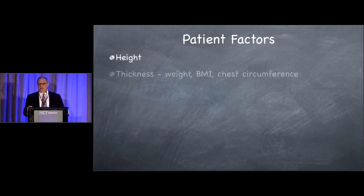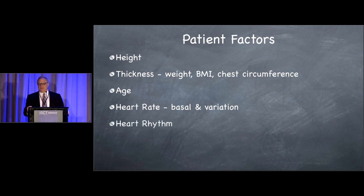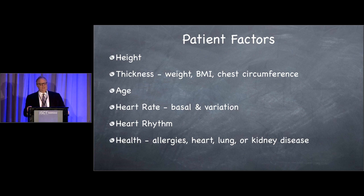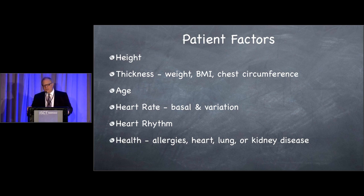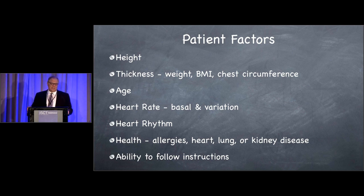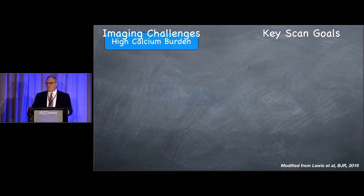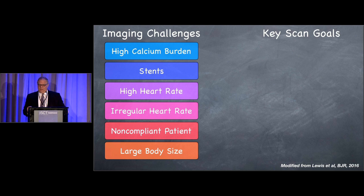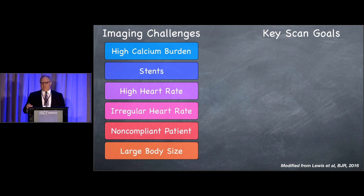Let's talk about patient factors. There are a number of factors that influence the quality of the CTA and the strategies we're going to take when imaging patients. Most notably, the size of the patient has a tremendous influence on image properties. Heart rate and rhythm are critical as well. The height or length of the heart affects how much coverage is needed. Age can influence how sensitive radiation exposure is to the patient's health. And amongst the most important is the ability to follow instructions.